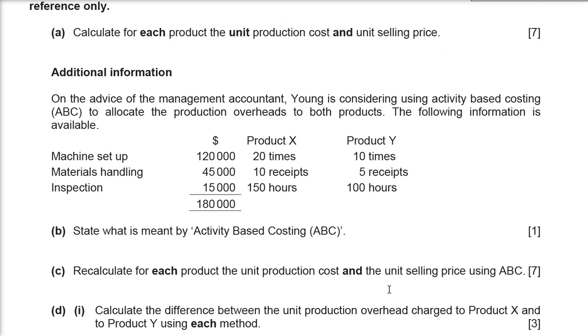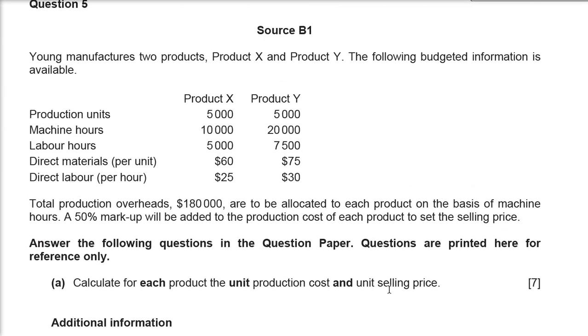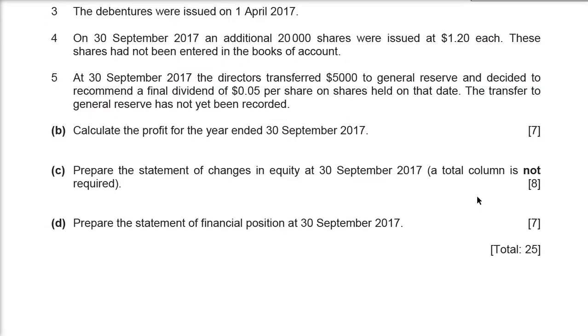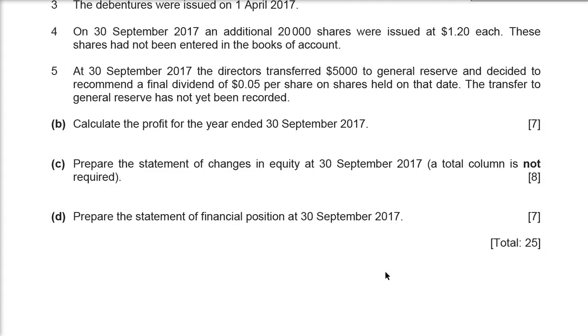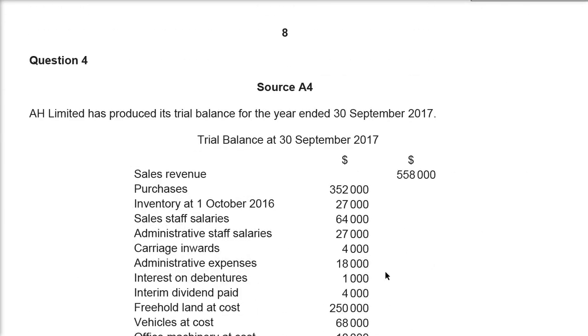Either the ABC question or the overheads question I mentioned earlier would most likely come. It asks you to calculate the profit for the year, statement of changes in equity, and SOFP. This is inside October/November 18, question A4. I hope you guys will study and have a good result.